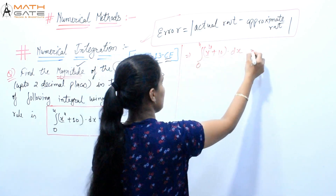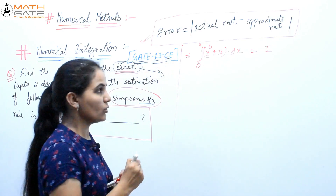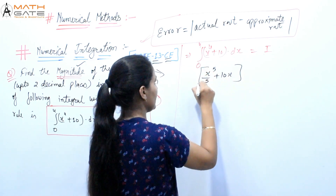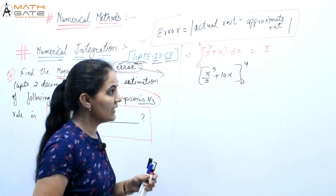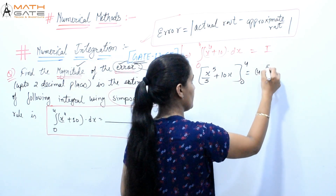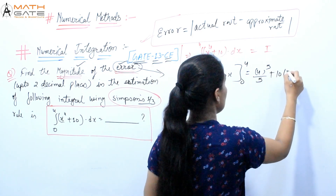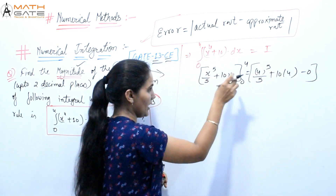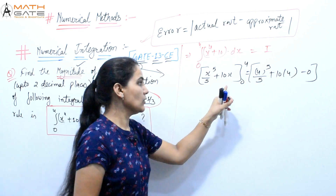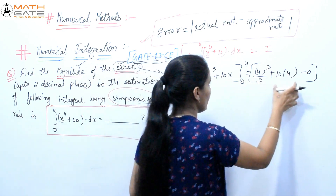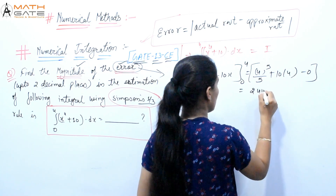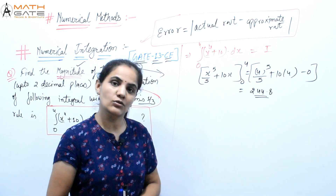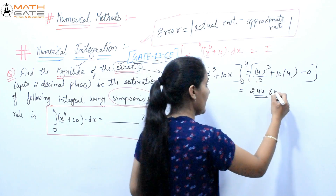Integrating: x⁵/5 + 10x, applying limits from 0 to 4. Substituting: (4⁵/5) + 10×4, minus 0 (since the lower limit gives zero). After solving this, we get 244.8. This is our actual root.